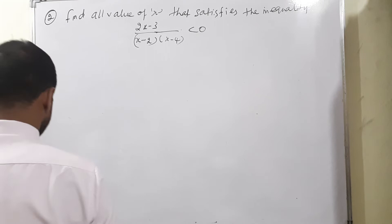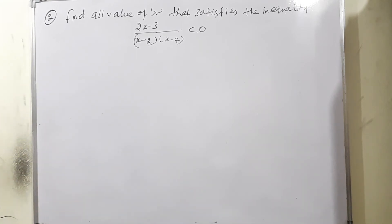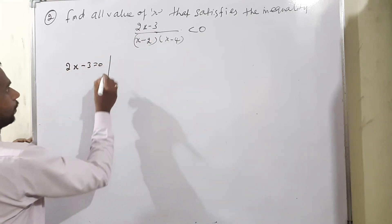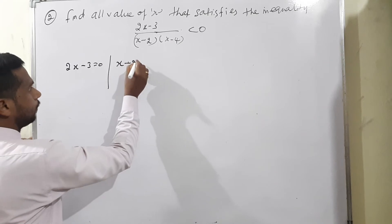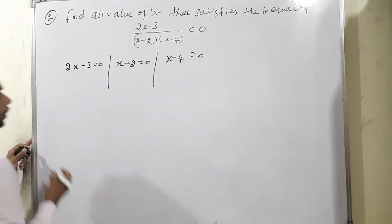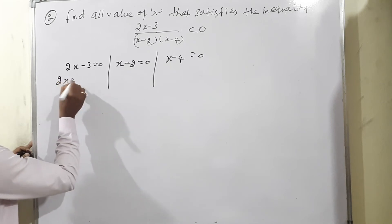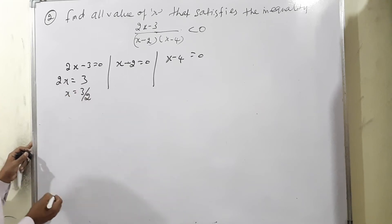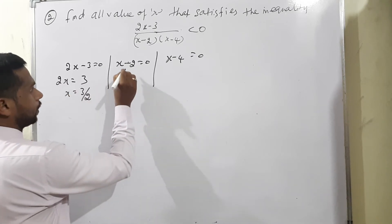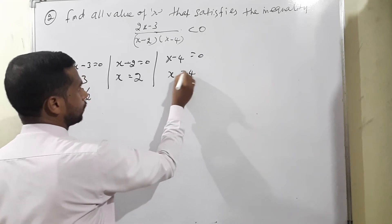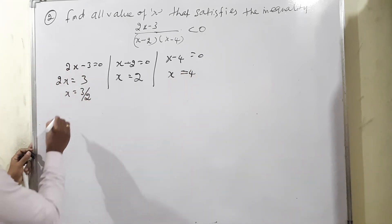Question 2 from exercise 2.8: the same concept. Separate the factors: 2x-3=0 gives x=3/2; x-2=0 gives x=2; x-4=0 gives x=4. On the number line: 3/2, 2, and 4 create four intervals.